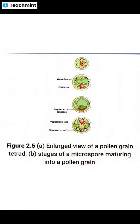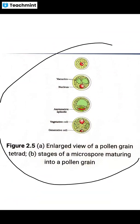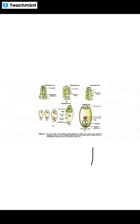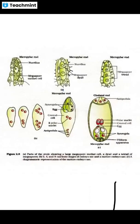The first diagram is from Chapter 2. This is the stages of microspore maturation. Look at the stages carefully and practice the diagram well. You don't need to color it like the textbook — just draw the main parts clearly. This is worth 2 to 2.5 marks and is the first diagram on my list.